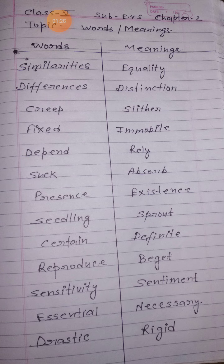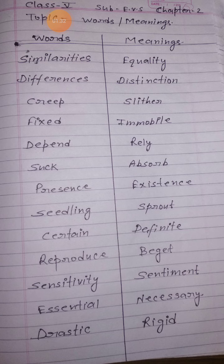Sensitivity — sentiment means kya hota hai? Seedling ko unverb karna. Essential means avasya — synonym is necessary. Necessary means avasya. Drastic means kathor, means rigid.